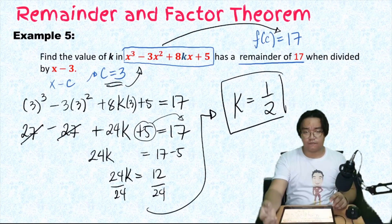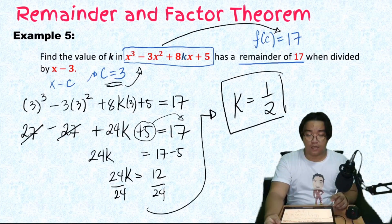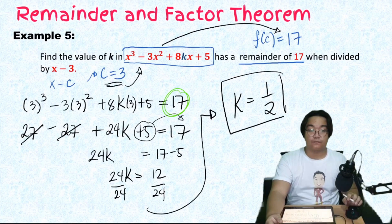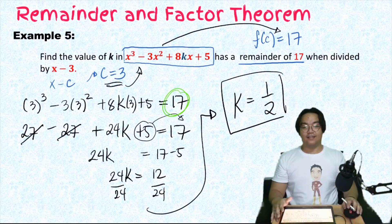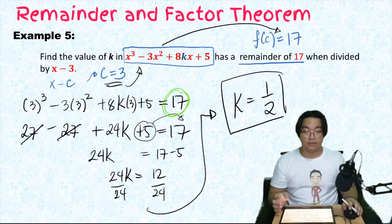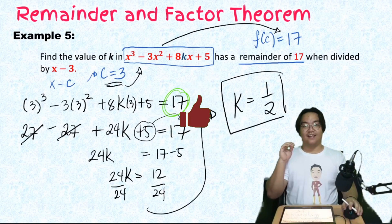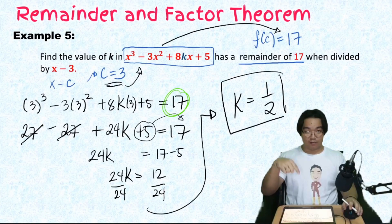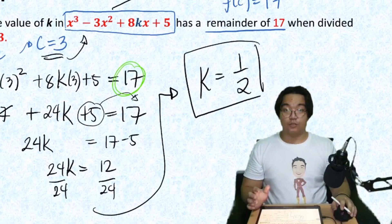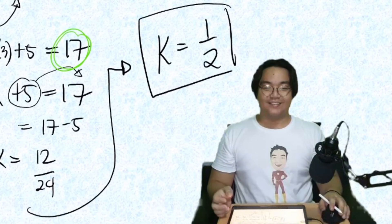The same approach applies with the factor theorem — if the problem says that (x - c) is a factor, then the remainder should be zero, so set f(c) = 0 instead. I hope you learned something from today's video about the remainder and factor theorem. For our next video we'll apply these in solving cubic and higher degree polynomials. Hit the like button if you learned something, comment below, and I'll see you in the next video.